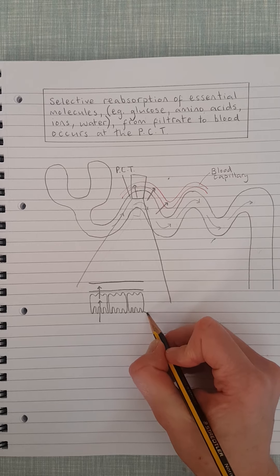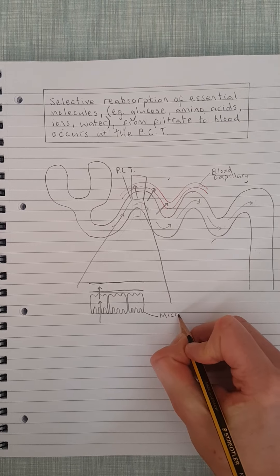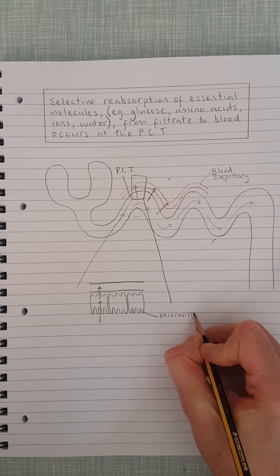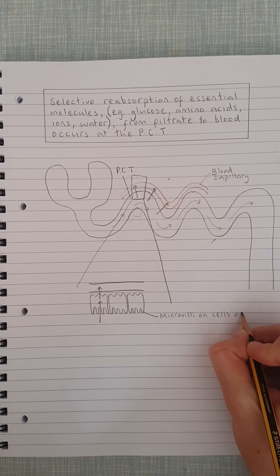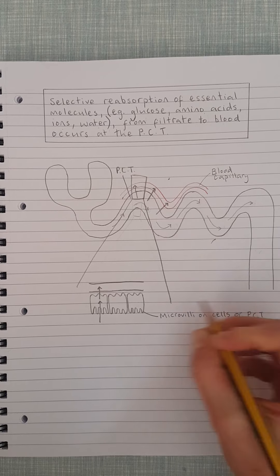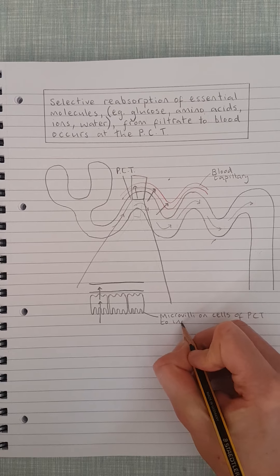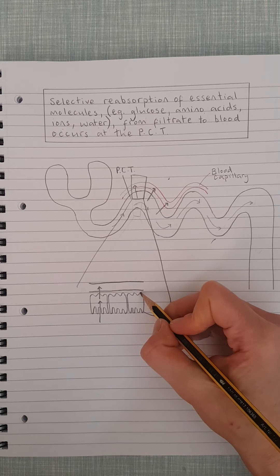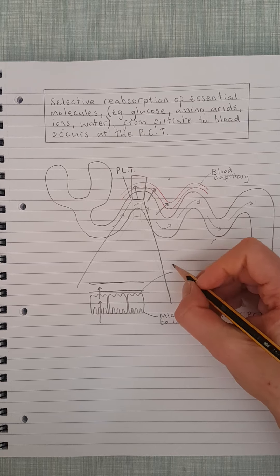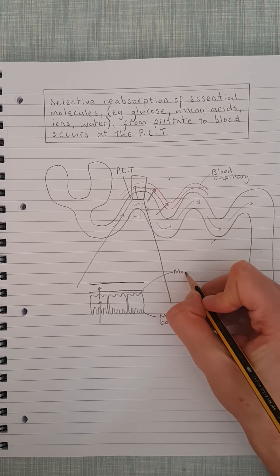So the first thing we can see is that we've got microvilli on the cells of the PCT, and they're obviously to increase surface area for absorption. Okay, so that's one thing. And then also what's interesting is we also have these folds, more folds, more folding.